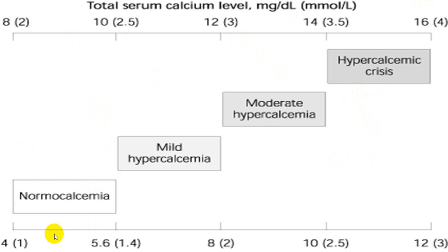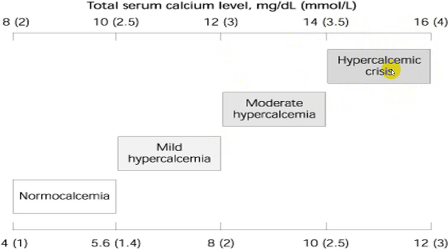The normal calcium level average is 10 mg/dL. If it increases more than 10, that is hypercalcemia. 10 to 12 is mild, 12 to 14 is moderate, more than 14 is severe hypercalcemia — during which a person can develop a hypercalcemic crisis. When it becomes more than 16, it is very severe and dangerous.